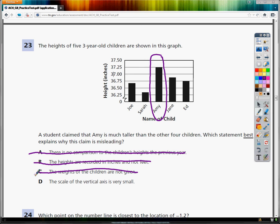So it has to be the last one. It's the only one that makes sense. But let's take a look at it anyway. The scale of the vertical axis is very small. This is the vertical axis because it's going up and down. And if you look at the scale, it is pretty small.